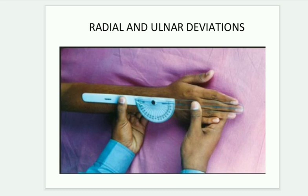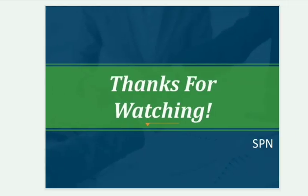This is your radial deviation. For ulnar deviation, the same procedure applies — the only change is the range, which is 0 to 30 degrees. The ulnar deviation range is greater than the radial deviation. Thanks for watching.